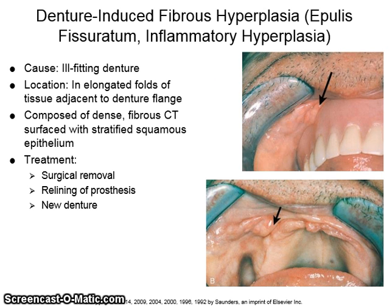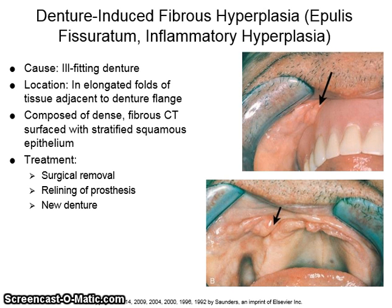Denture-induced fibrous hyperplasia, epulis fissuratum, or inflammatory hyperplasia, is caused by ill-fitting dentures. It is located in the elongated folds of tissue adjacent to the denture flange and is composed of dense fibrous connective tissue surfaced with stratified squamous epithelium. The treatment is surgical removal, relining of the prosthesis, or a new denture.